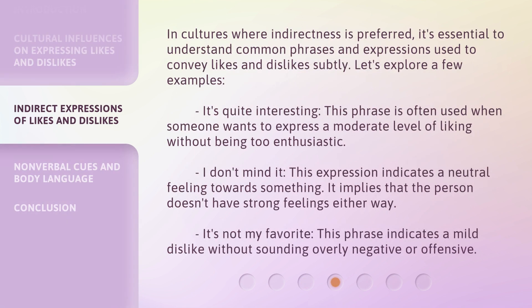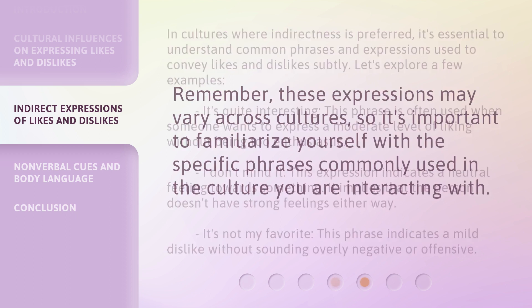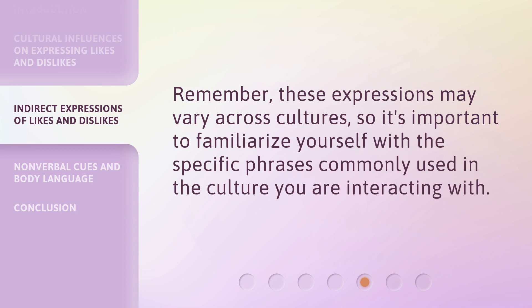In cultures where indirectness is preferred, it's essential to understand common phrases and expressions used to convey likes and dislikes subtly. Let's explore a few examples. 'It's quite interesting' is often used when someone wants to express a moderate level of liking without being too enthusiastic. 'I don't mind it' indicates a neutral feeling towards something, implying no strong feelings either way. 'It's not my favorite' indicates a mild dislike without sounding overly negative or offensive. Remember, these expressions may vary across cultures, so it's important to familiarize yourself with the specific phrases commonly used in the culture you are interacting with.